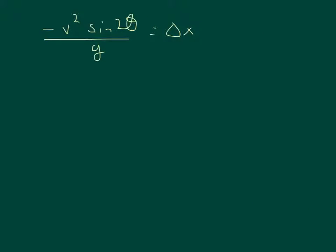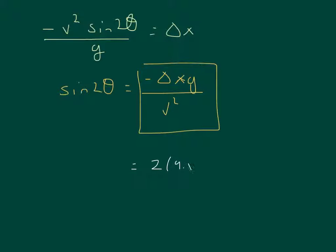Now that I have my range equation, I want to solve this for theta. Then I get sine 2 theta equals delta x g over negative v squared. This negative basically means that this thing in the box is going to be a positive number. Putting in my numbers, I get 2 times 9.8 divided by 6.8 quantity squared.